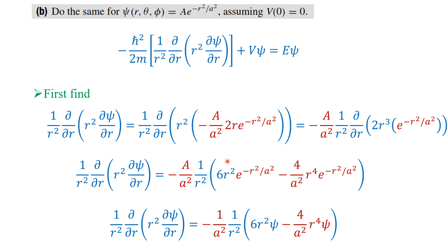Differentiating r³·e^(-r²/a²) using the product rule: differentiating r³ gives 3r², times e^(-r²/a²), which gives the term 6r²·e^(-r²/a²) (with the factor of 2 already included). Then keep r³ and differentiate e^(-r²/a²), giving r³·e^(-r²/a²)·(-2r/a²), so the second term is -4r⁴/a² times e^(-r²/a²).